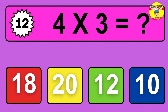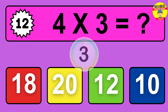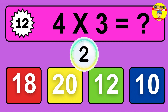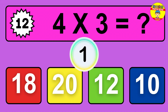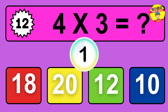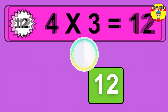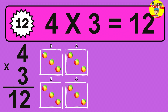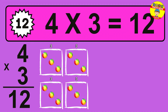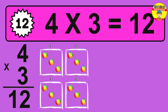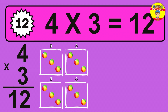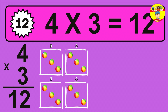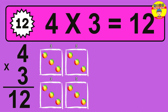Question 12. 4 times 3 equals what? The answer is 4 times 3 is 12. To calculate, we have 4 groups with 3 balls each one. So how many balls do we have? 12 balls.